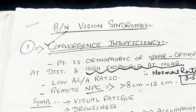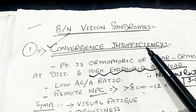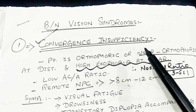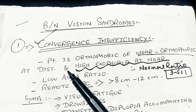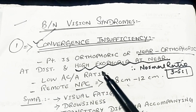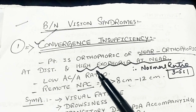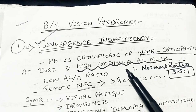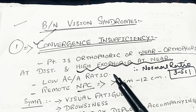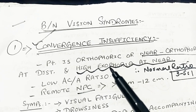As the name indicates, convergence insufficiency means the patient is unable to converge at near. So the patient is orthophoric or near orthophoric at distance — meaning the patient has straight eyes at distance — and high exophoria at near. We find out exophoria at near by cover-uncover test and by alternate cover test.